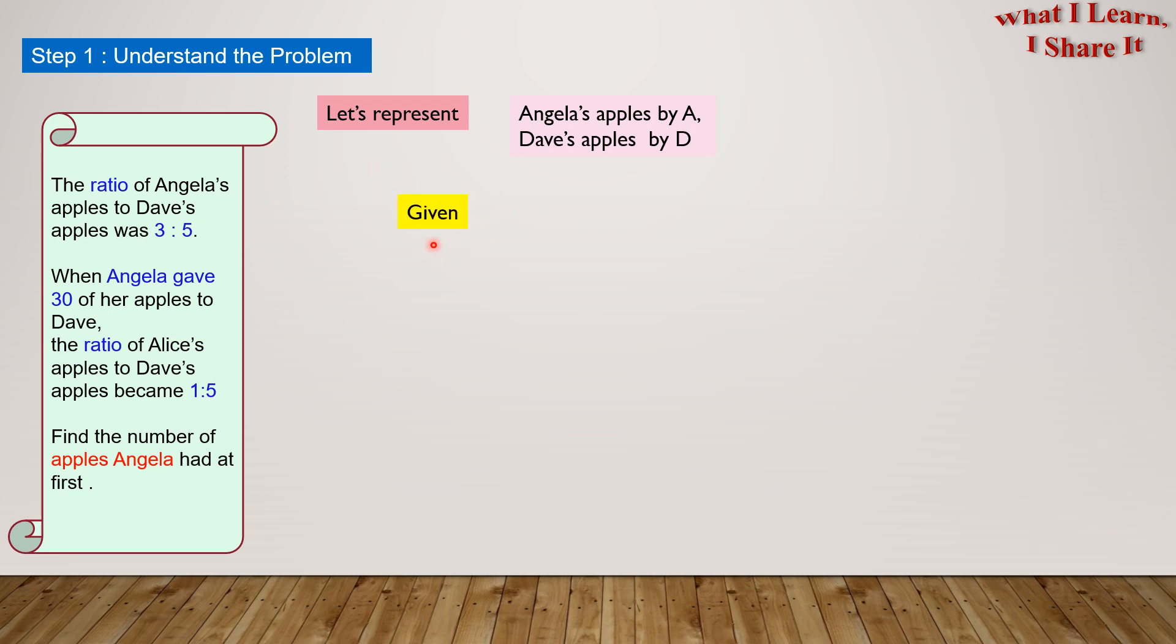What is given to us? We are given the ratio of Angela's apples to Dave's apples was 3 is to 5. This means A is to D equals 3 is to 5.